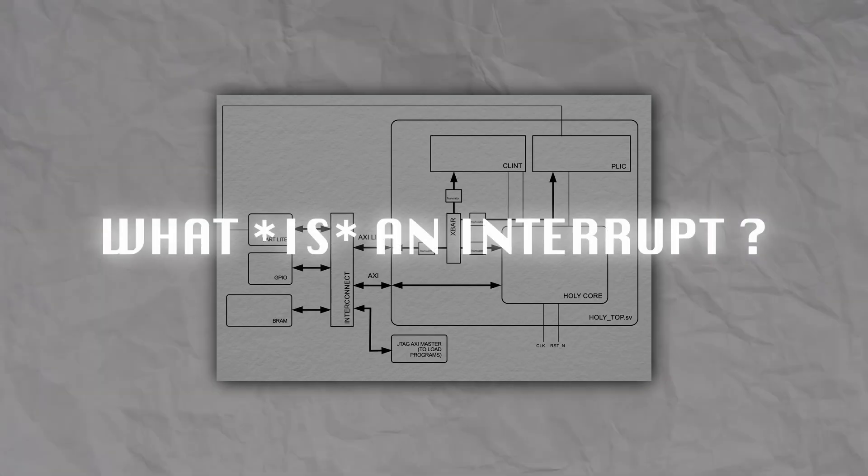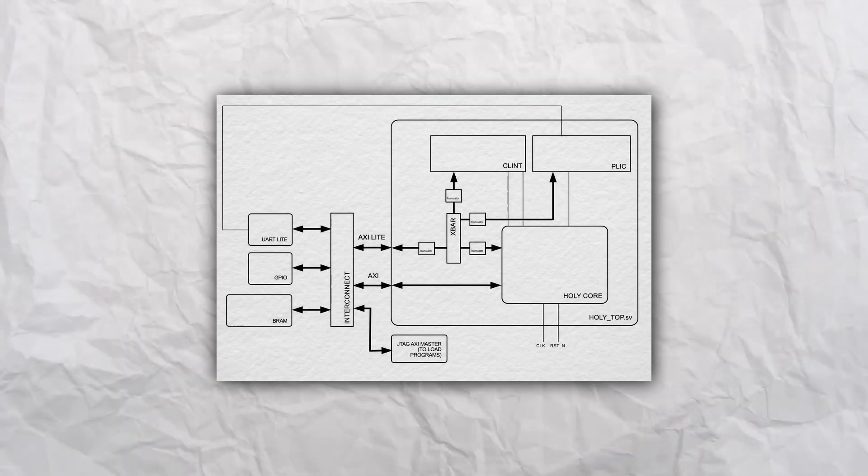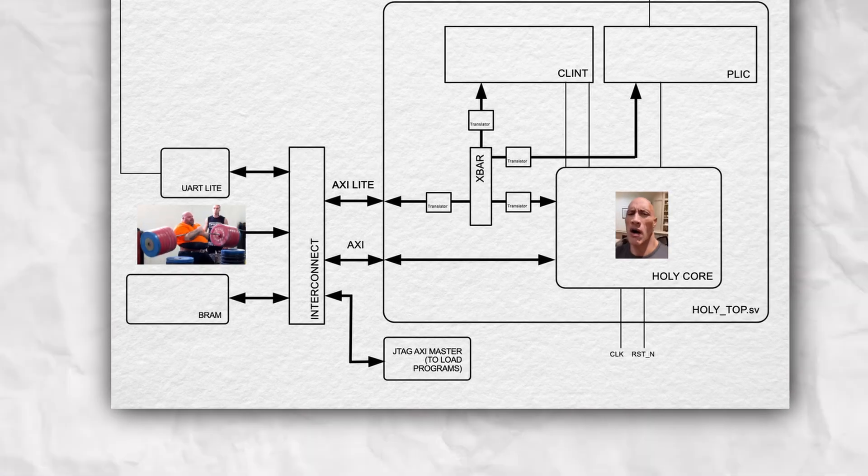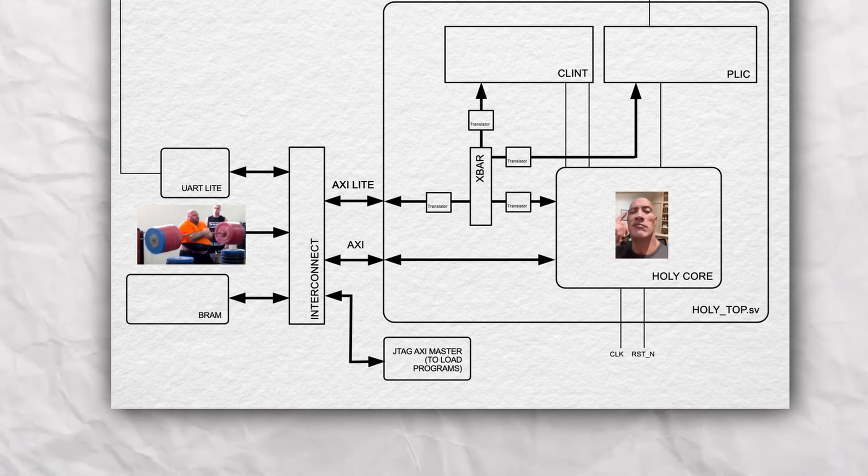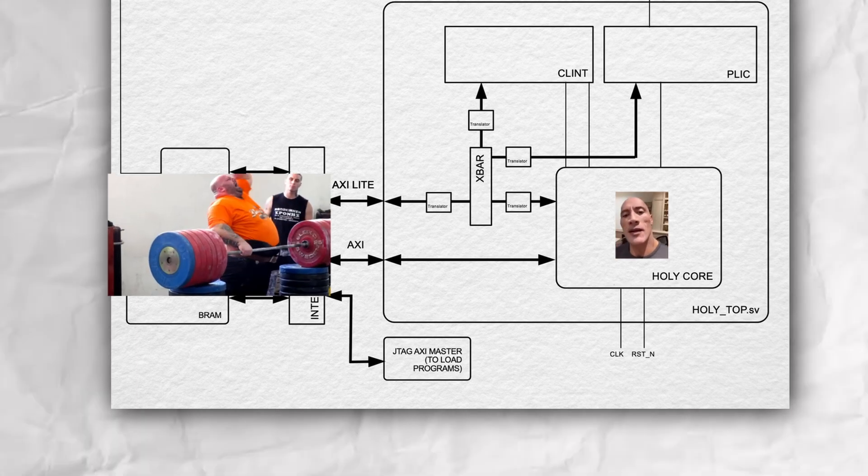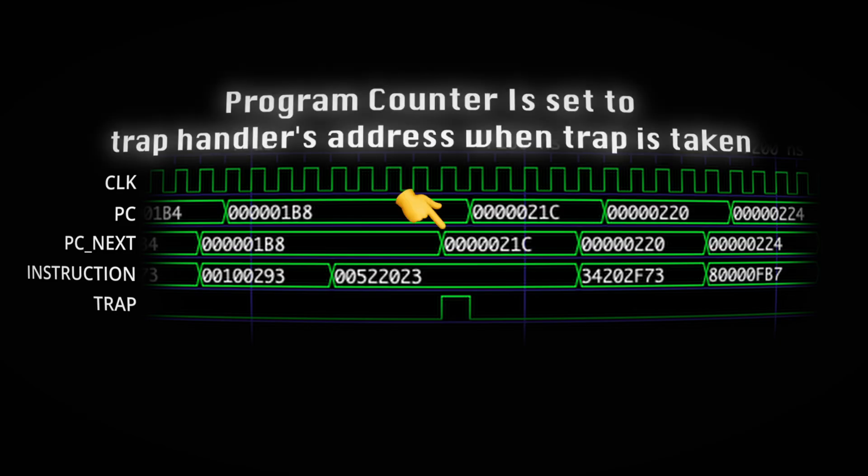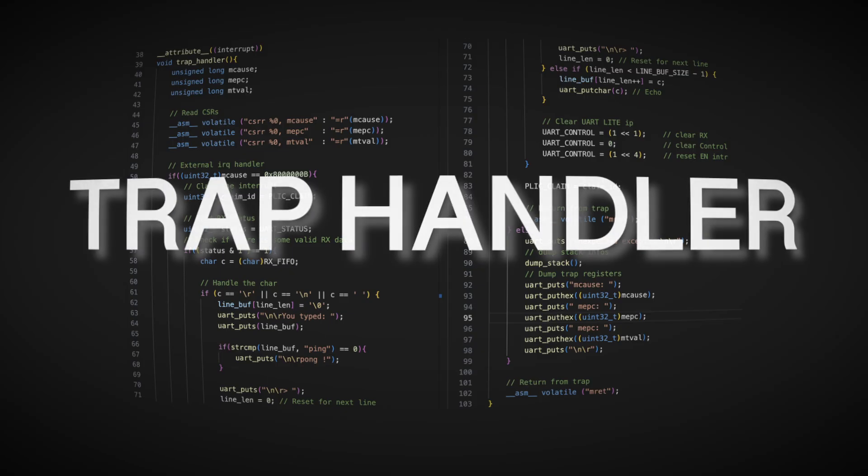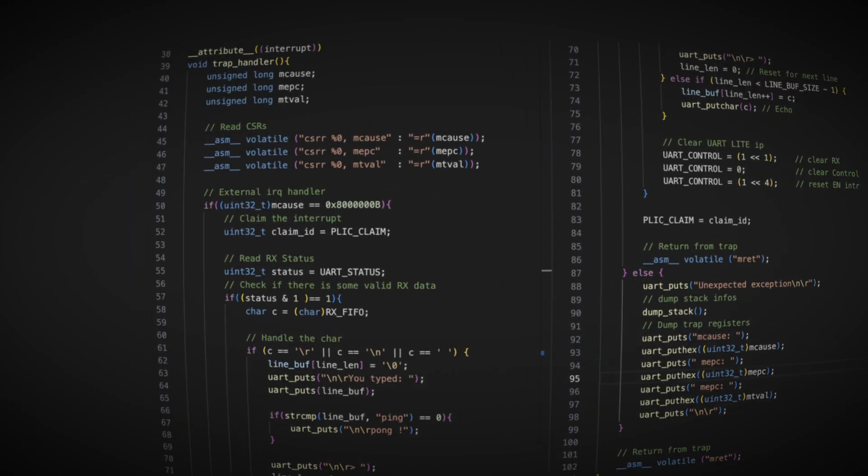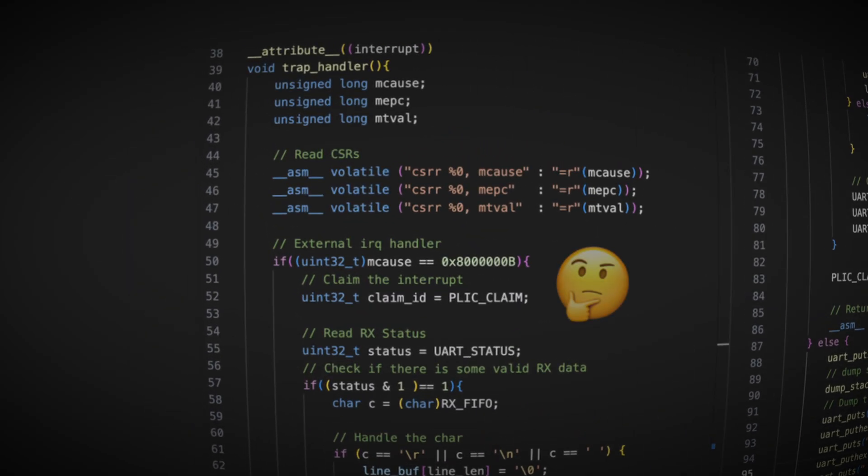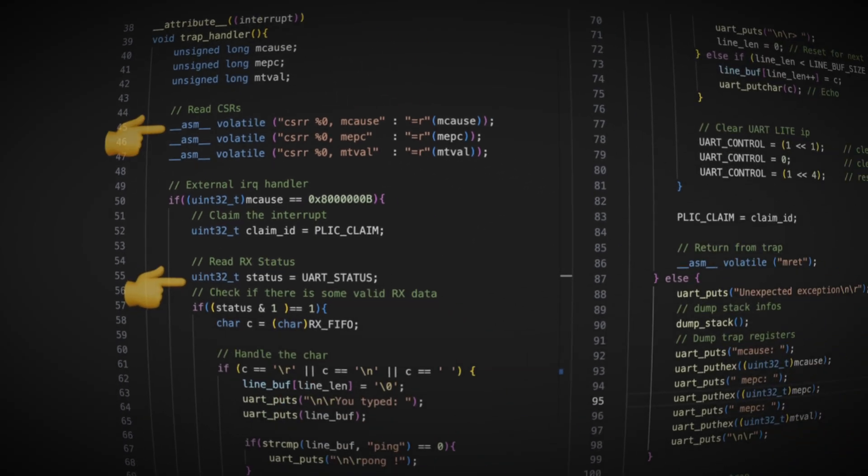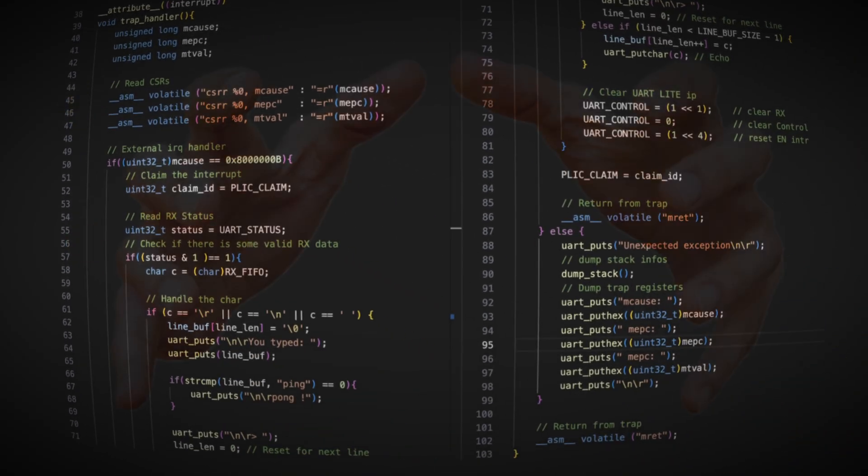So, just what even is an interrupt? Simply put, it's when an external component screams at the CPU like Hey, I need your attention right now on this matter. When that happens, the CPU triggers something called a trap. But what it really means is just that it stops whatever it's doing and it jumps to a special piece of code called the trap handler. This piece of arbitrary code figures out what caused a trap by reading some registers, and then it deals with it however you want.